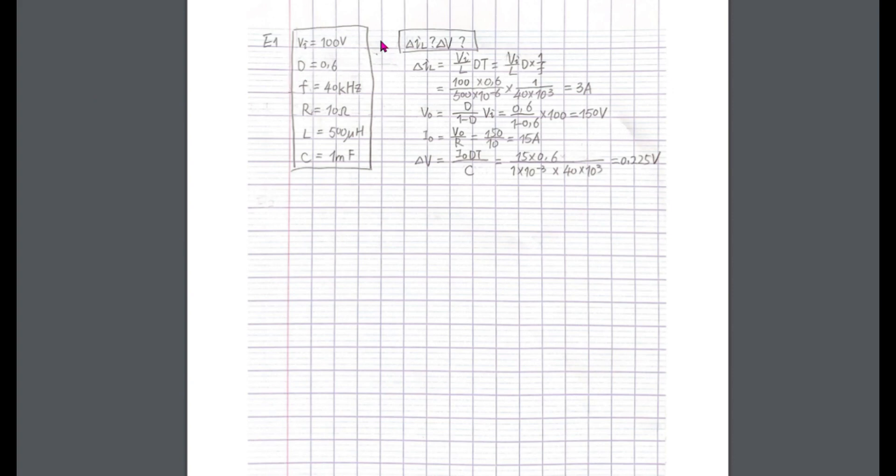The first exercise is to calculate the ripple current and ripple voltage based on these conditions. We just need to put the formula for ripple current, then first get the output voltage and current, then put the formula for the ripple voltage.